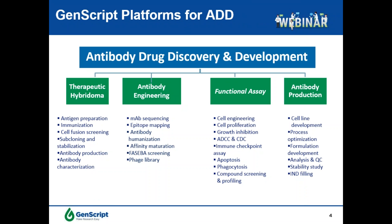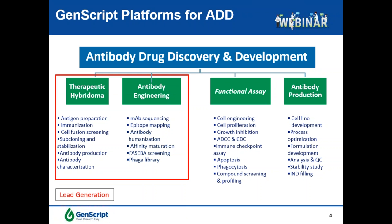This is the overview of GenScript's platform for antibody drug discovery and development from target to IND. Hybridoma generation and lead identification is the start. After getting antibody leads from the hybridoma approach, antibody engineering is performed for lead optimization, including antibody humanization and affinity maturation. Leads from the hybridoma approach typically have reasonably high affinity with KD in nanomolar to subnanomolar range, and therefore affinity maturation may not be necessary, especially with an affinity-guaranteed immunization process.